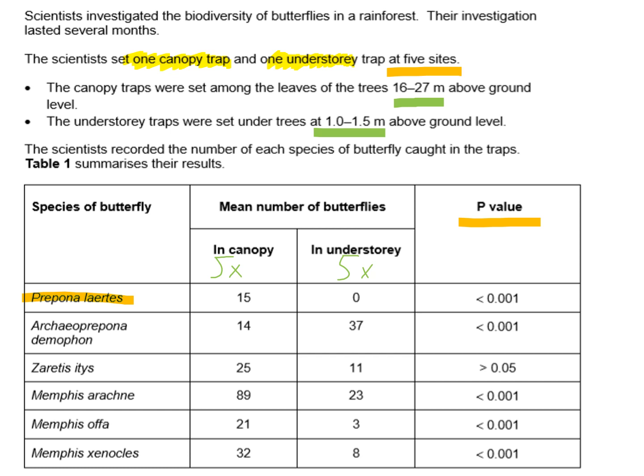A t-test compares two groups of data — here the canopy versus the understory — using mean values to see if the differences are significant. We use 0.05 as our threshold level. If the p-value is really low, below 0.05, such as 0.001, then we say the differences are highly significant.